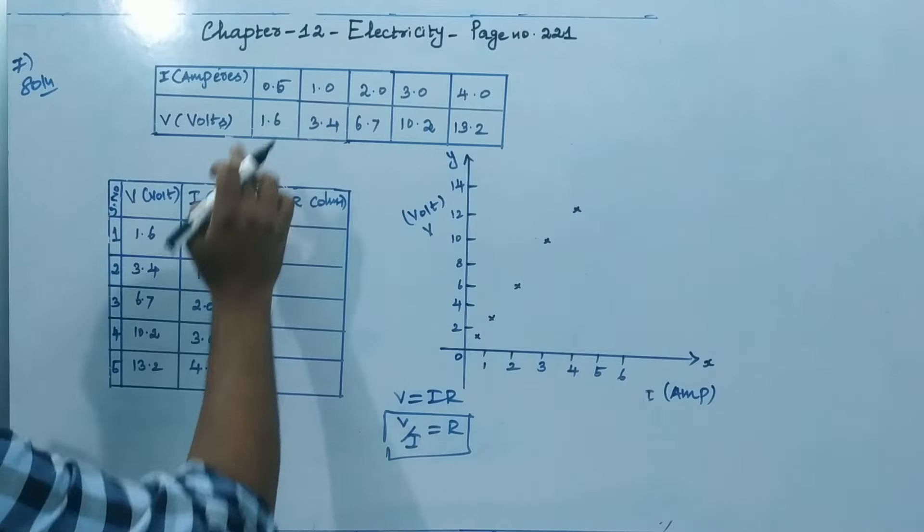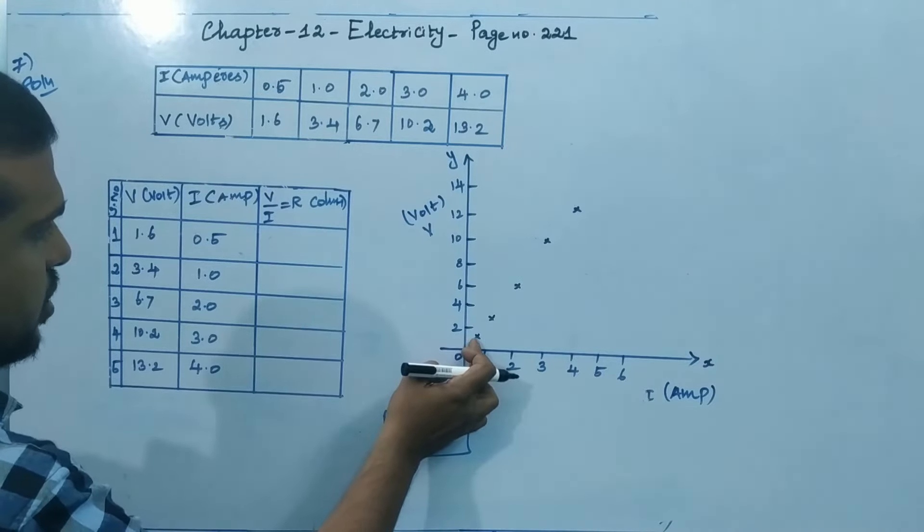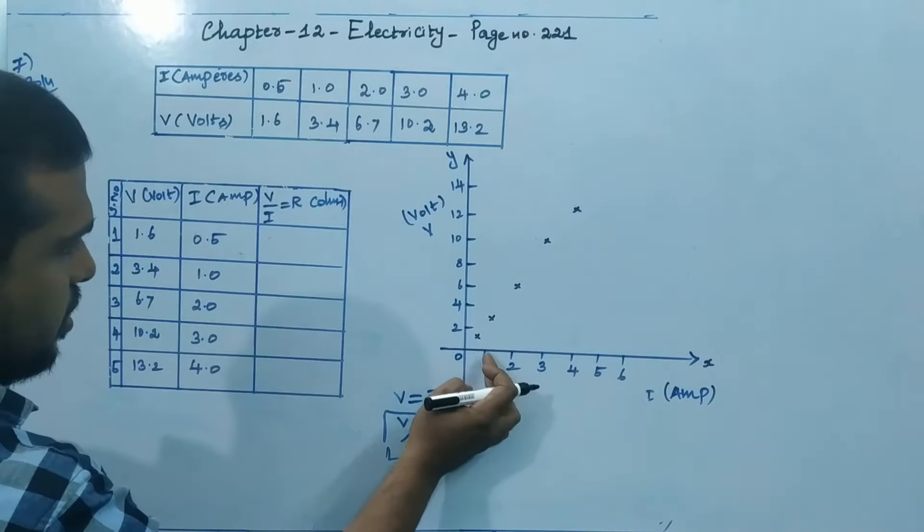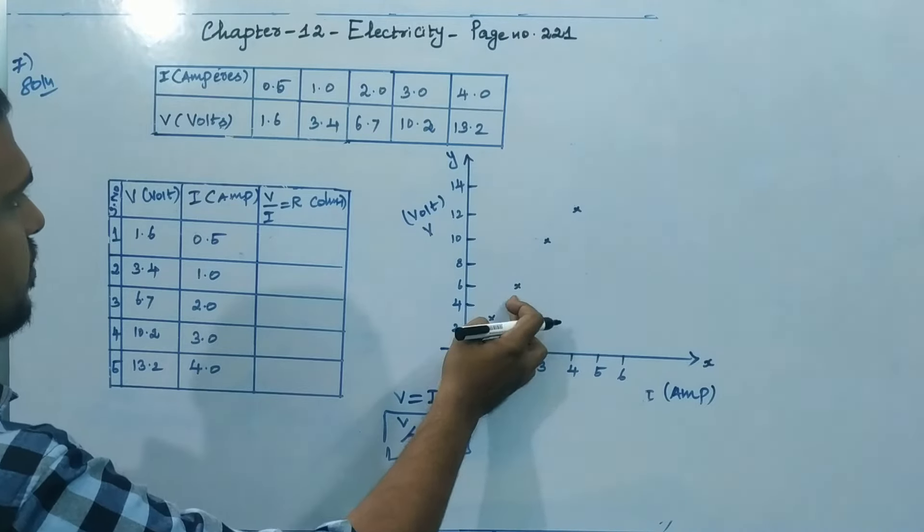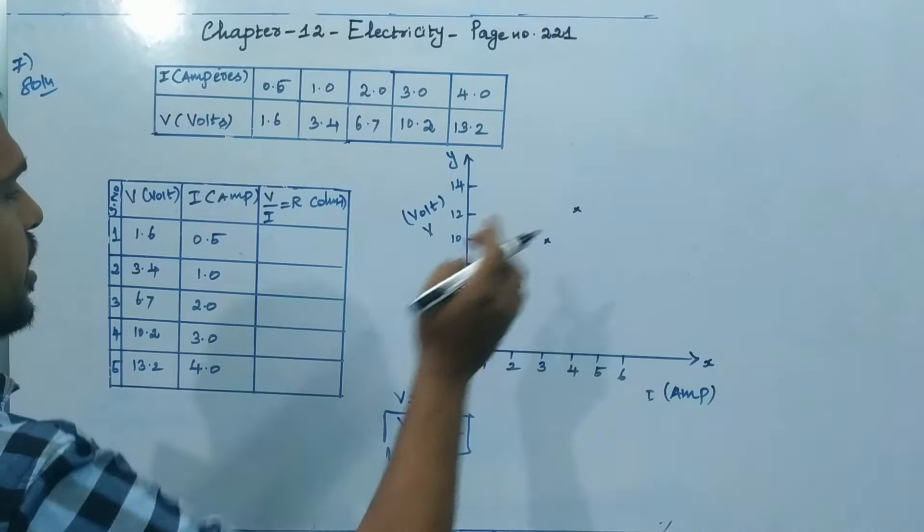So first one is 0.5 and 1.6. So here see the 0.5 and 1.6, first this one we'll take R1. Same way 1 and 3.4, here 1 into 3.4, second R2. Same way 2 into 6.7, 3 into 10.2, 4 into 13.2.